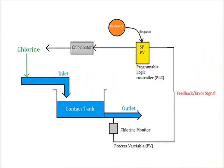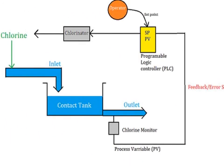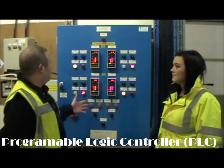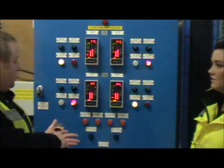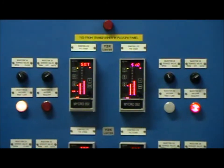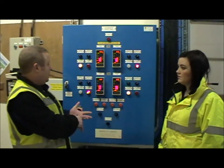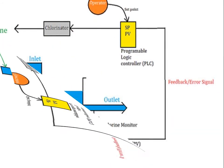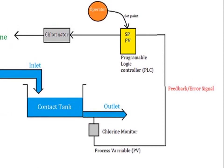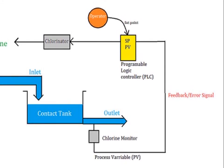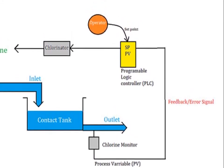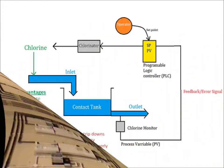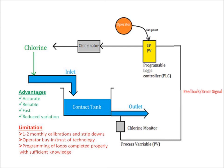Here we have a diagram of a closed loop chlorine control system for a water treatment works contact tank. The operator inputs a set point within the SCADA control system, which is sent to the Programmable Logic Controller — these are the actual controllers that control our plant. They take basic signals such as the flow through the plant and the chlorine signal measured at the tank outlet, and then they look at that information and write an output. Chlorine monitors collect a sample from the contact tank outlet and send a process variable to the logic controller.